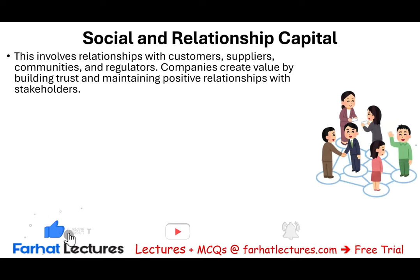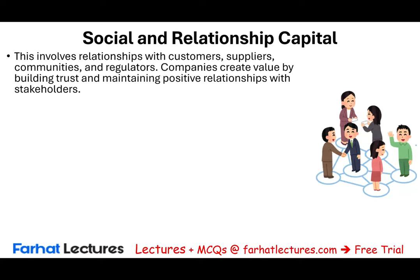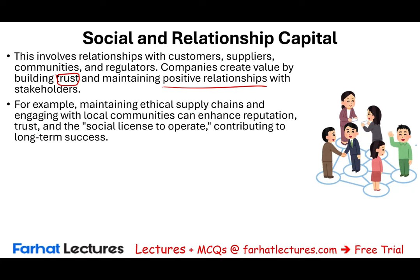Social and relationship capital, the fourth one, involves relationships with customers, suppliers, community, and regulators. The company creates value by building trust and maintaining positive relationships with its stakeholders. Maintaining ethical supply chains and engaging with local communities can enhance your reputation. Trust and social license to operate contribute to long-term success. The most important thing is trust — you've got to enhance your reputation, contribute to the community, and not pollute.